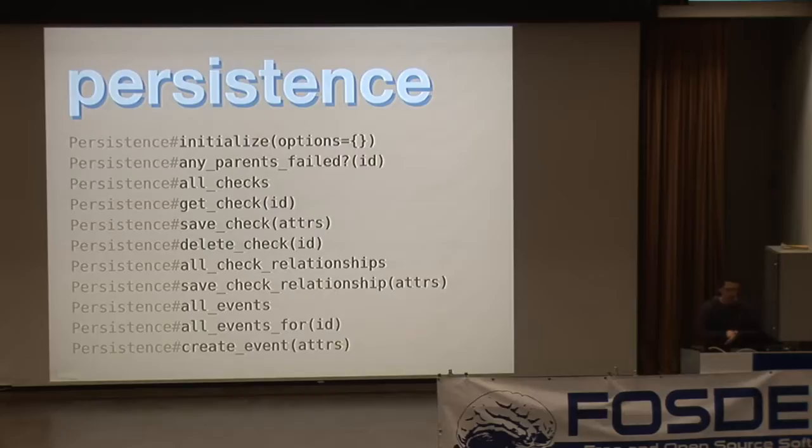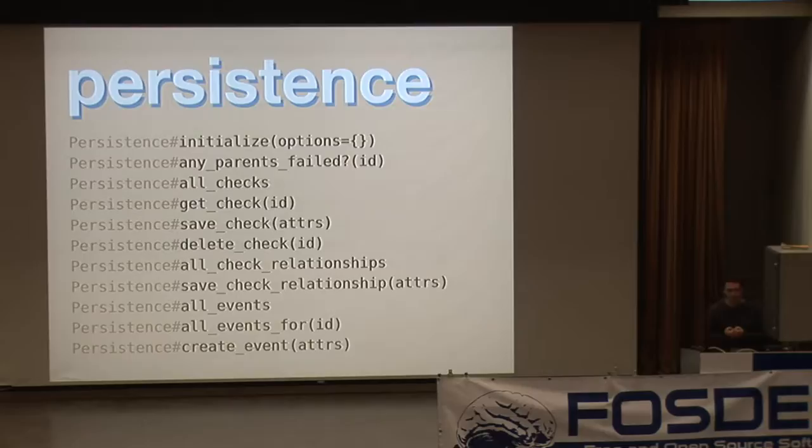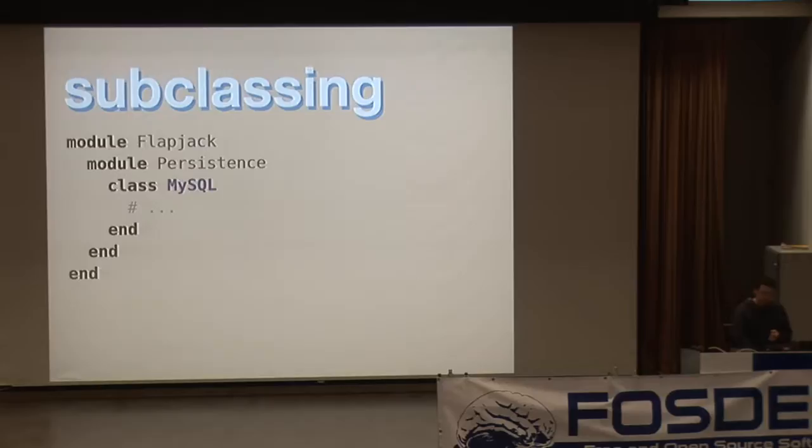The next API is the persistence API. There are a bunch of methods, and the documentation has a lot of information about how to build different persistence APIs. The tests are also a fantastic source for working out how to write your own persistence APIs. Right now there are two persistence backends provided with Flapjack: SQLite and CouchDB, and I also have a MySQL one in the works.